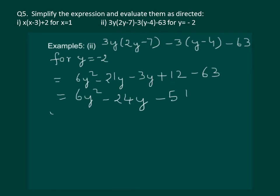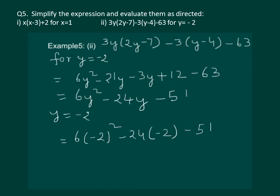Now substituting y equal to minus 2 will give us 6 into minus 2 whole squared, minus 24 into minus 2, minus 51. This will give us 24 plus 48 minus 51, which is equal to 21, and this is the required answer.